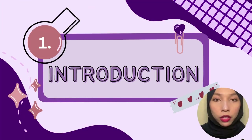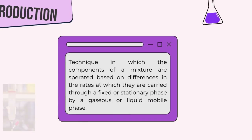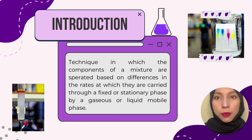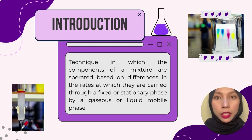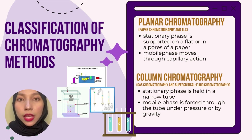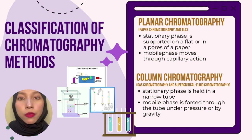Right now, I'm going to explain about the interaction of chromatography uses in industry. Chromatography is a technique in which the components of a mixture are separated based on differences in the rates at which they are carried through a fixed or stationary phase by a gas or a liquid mobile phase. There are two classifications of chromatography methods: planar chromatography, such as paper chromatography and TLC, and column chromatography, such as gas chromatography and supercritical fluid chromatography.